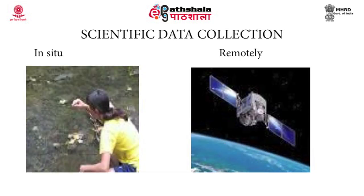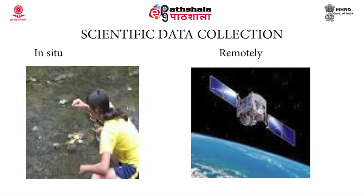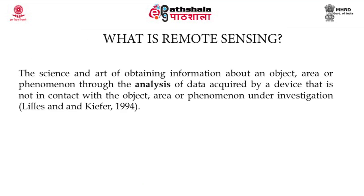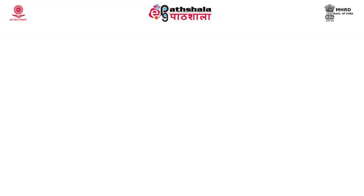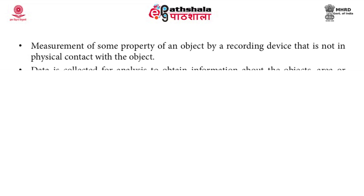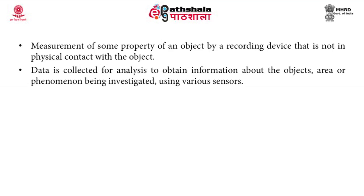Data collection by any scientific process can be done in two ways. First is in-situ, where we go to the ground and collect the information. The second is remotely, where the data information is collected without any physical contact with the object. Remote sensing is the science and art of obtaining information about an object, area or phenomena through the analysis of data acquired by a device that is not in contact with the object, area or phenomena under investigation. Measurement of some property of an object by a recording device not in physical contact with the object is remote sensing.